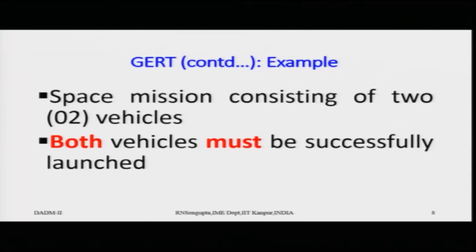Consider a simple space mission example consisting of two launch vehicles. Both vehicles must be successfully launched for the space mission to succeed. One booster rocket takes the spacecraft from zero to one hundred kilometers, and the second booster rocket takes it from one hundred to two hundred kilometers. Both must be operational for the mission.